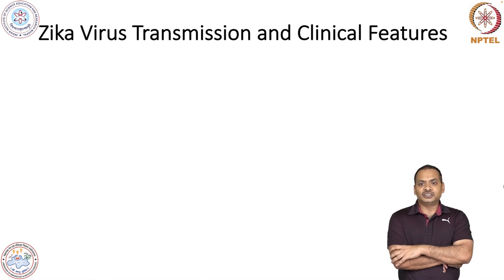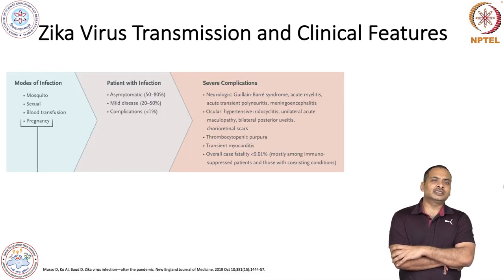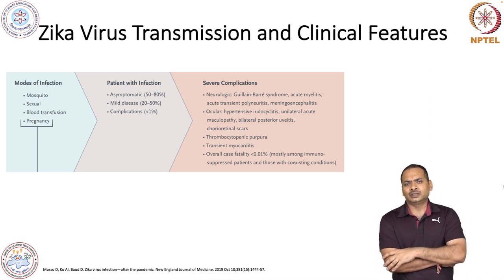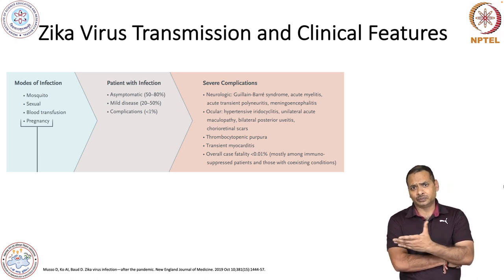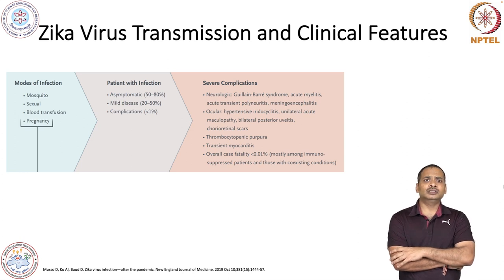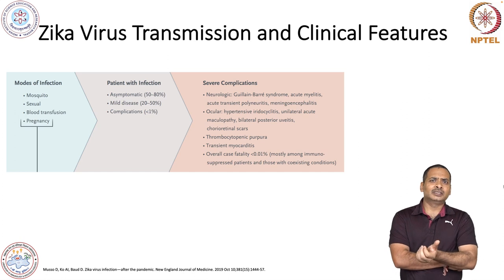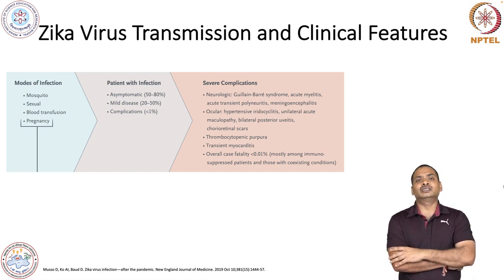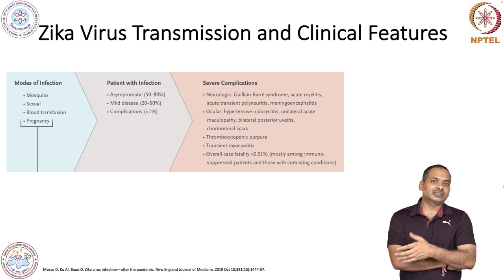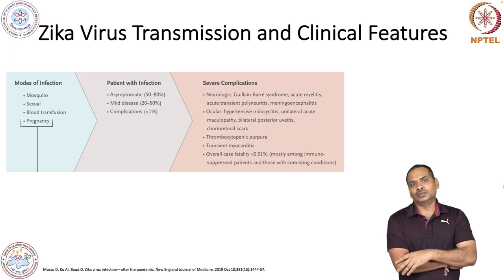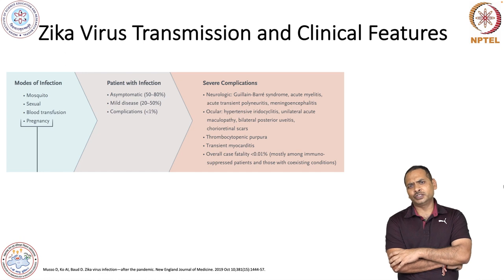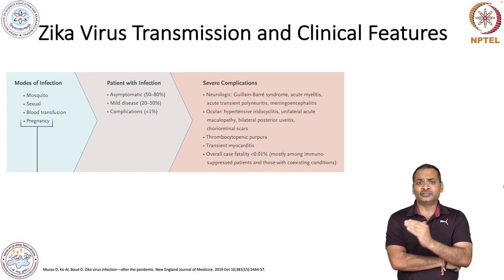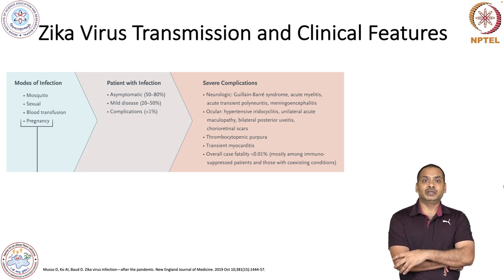Regarding Zika virus transmission and clinical features, this virus infects individuals through mosquito bites. It can also infect through sexual transmission and blood transfusion. Pregnant women are also readily infected, as they have a slightly higher body temperature which attracts mosquitoes. Most patients are asymptomatic — about 50 to 80 percent of infected individuals are asymptomatic. This is good news.